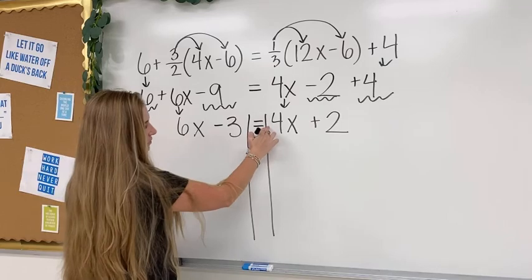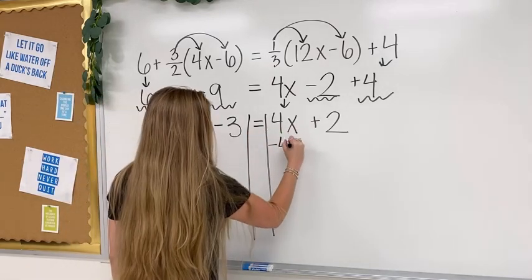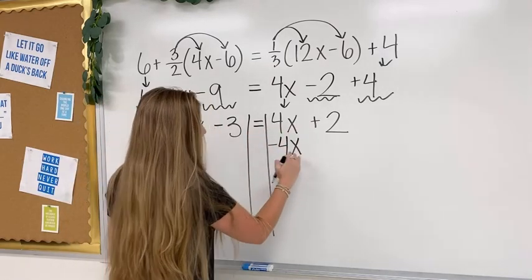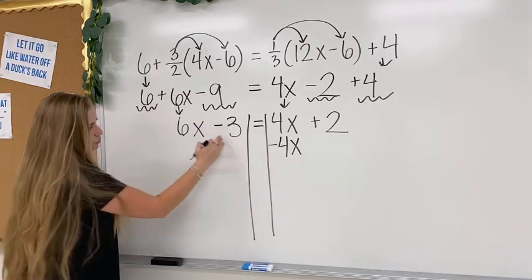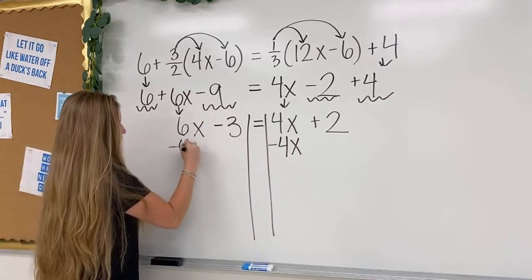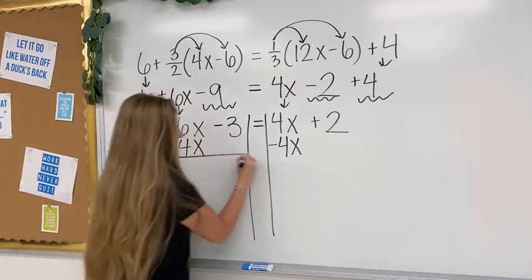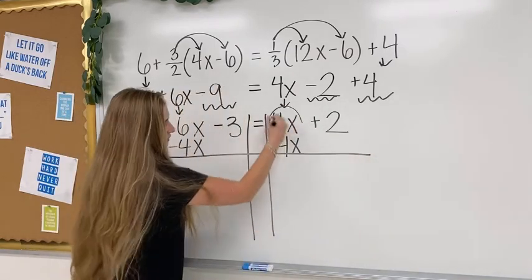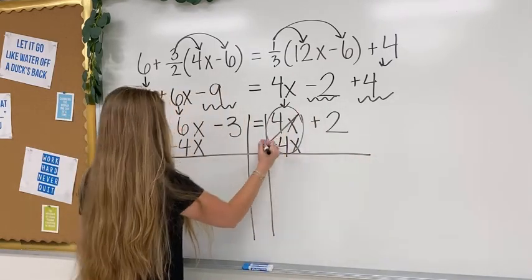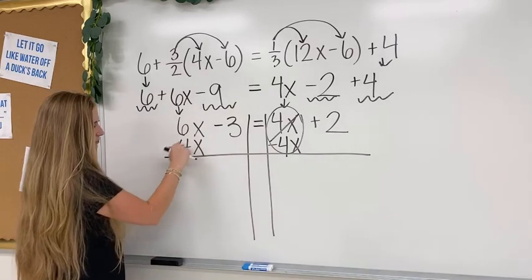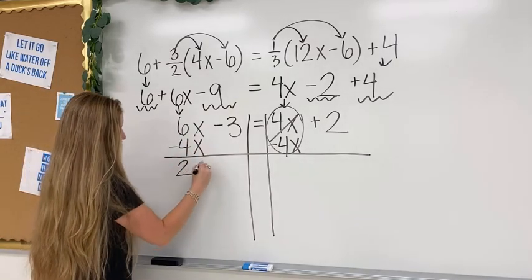The inverse operation of positive 4x would be to subtract 4x. Anything you do on one side, you have to do on the other side to the like term. Then I see this is my zero pair, and then I just do some math. 6x minus 4x would give me 2x.